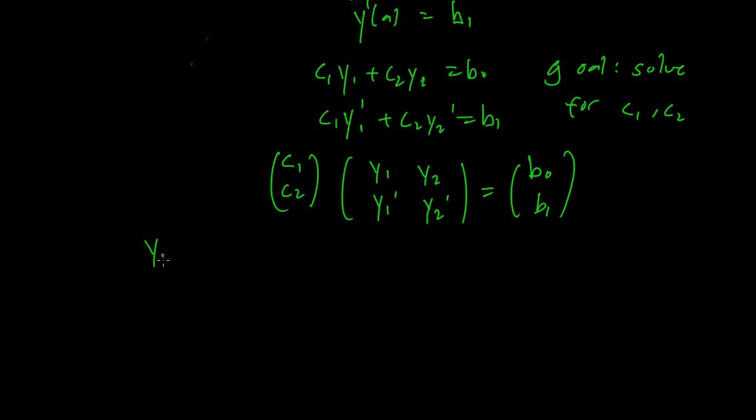But y1, y2 are linearly independent, so the Wronskian has determinant non-zero, which implies that the matrix is invertible.